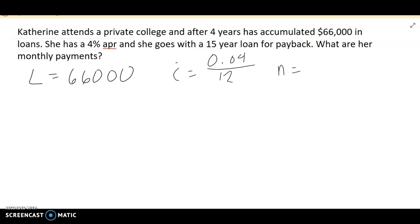And then for N, we are paying 15 years but it's monthly. So we're making 12 payments a year. So that means our value of N is 180.